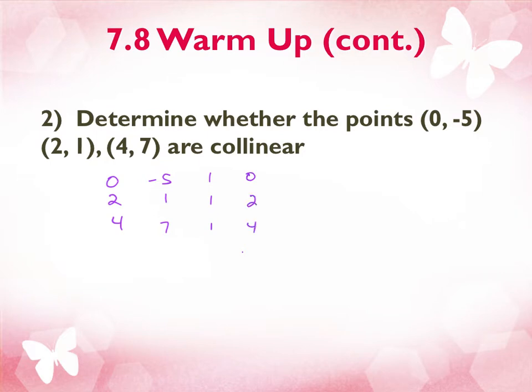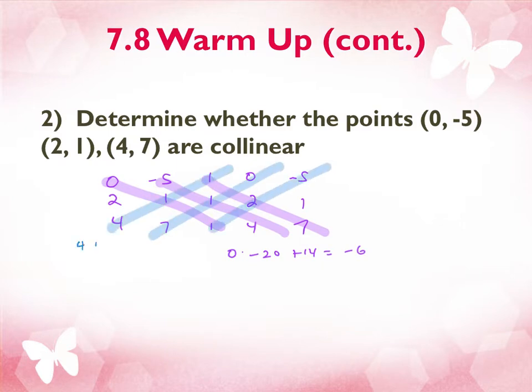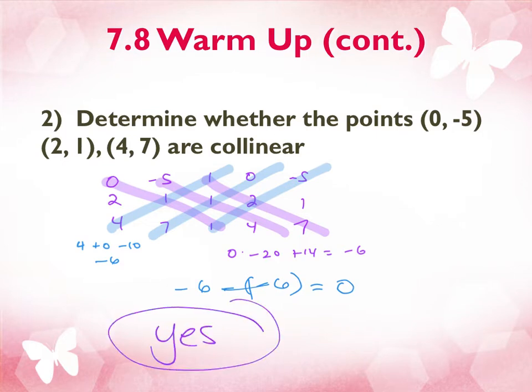Duplicate row or column 1 and column 2. And then the diagonals, top left, bottom right. This would be 0, minus 20, plus 14, negative 6. Go back the other way. 4, 0, negative 10, negative 6. And I get negative 6 minus a negative 6. Becomes plus 6. And my determinant is 0. So this means, yes, these are collinear this time. If it's anything other than 0, it's a no. But if it's 0, it's a yes.